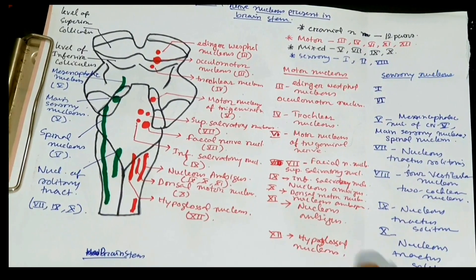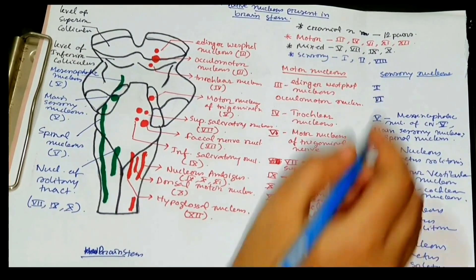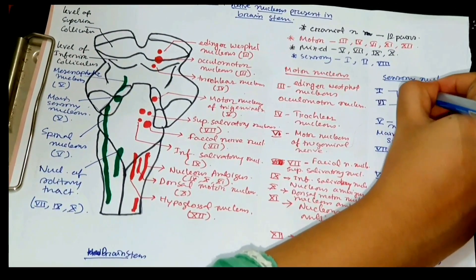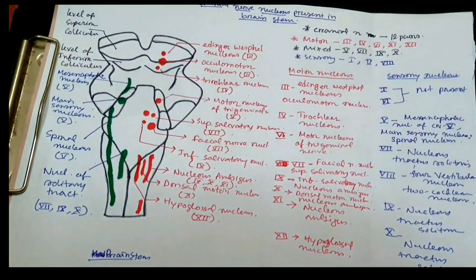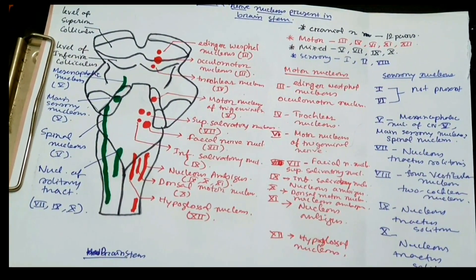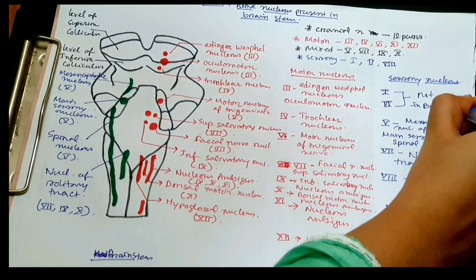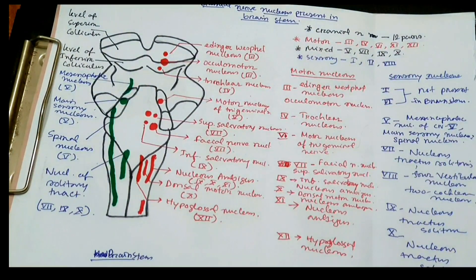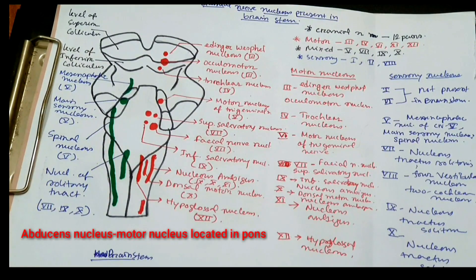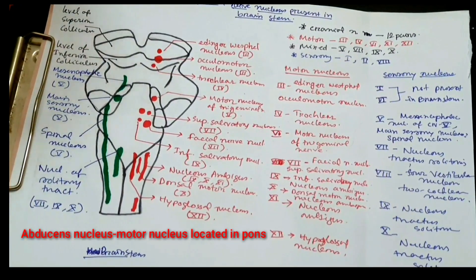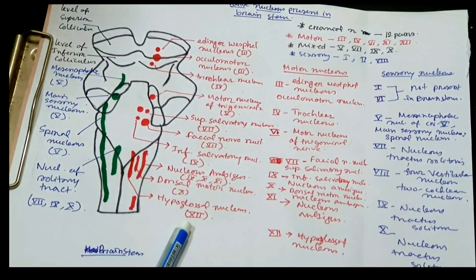Cranial nerves one and two, the olfactory and optic nerves, are purely sensory, but they have no nucleus present in the brainstem. These are all the cranial nerve nuclei present in the brainstem. The blue color indicates the sensory nuclei and the red indicates motor nuclei, so you can differentiate them easily.